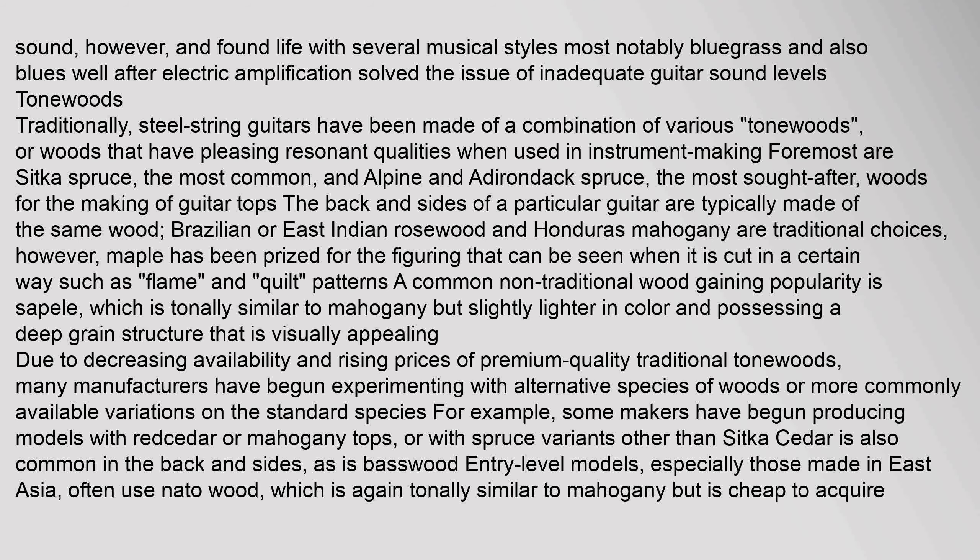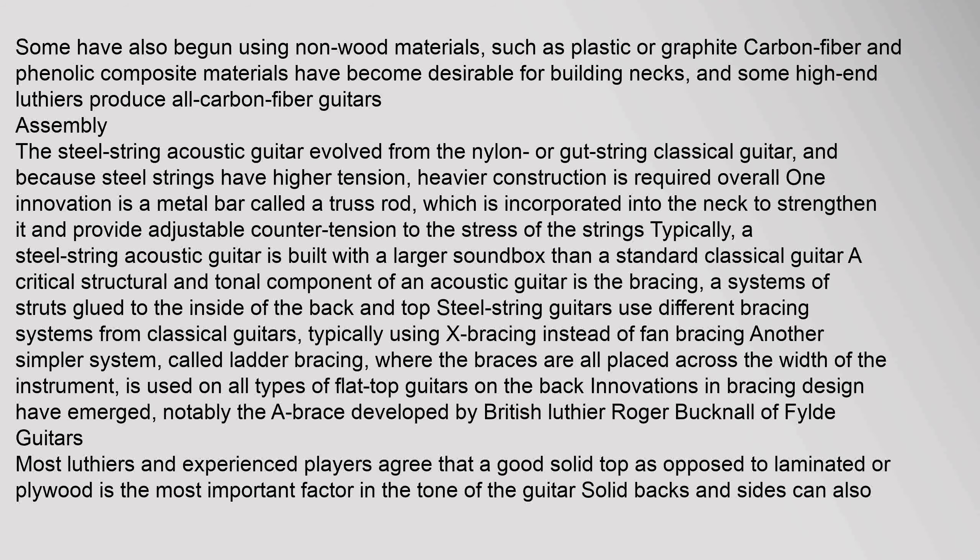Due to decreasing availability and rising prices of premium quality traditional tonewoods, many manufacturers have begun experimenting with alternative species of woods or more commonly available variations on the standard species. For example, some makers have begun producing models with red cedar or mahogany tops, or with spruce variants other than Sitka. Cedar is also common in the back and sides, as is basswood. Entry-level models, especially those made in East Asia, often use nato wood, which is tonally similar to mahogany but cheap to acquire. Some have also begun using non-wood materials such as plastic or graphite; carbon fiber and phenolic composite materials have become desirable for building necks, and some high-end luthiers produce all carbon fiber guitars.